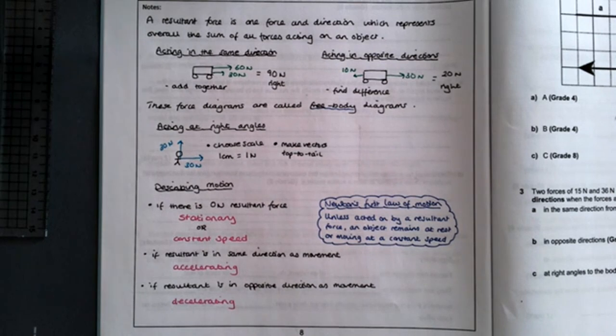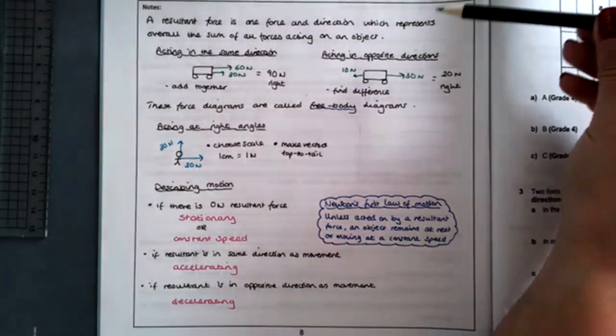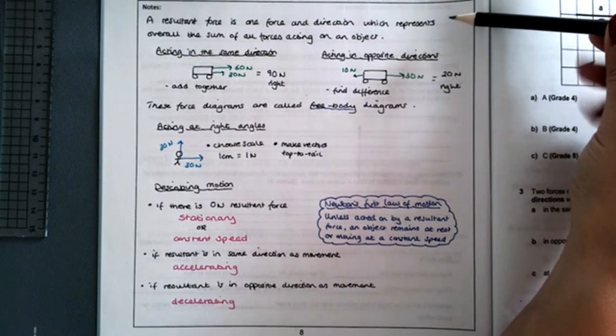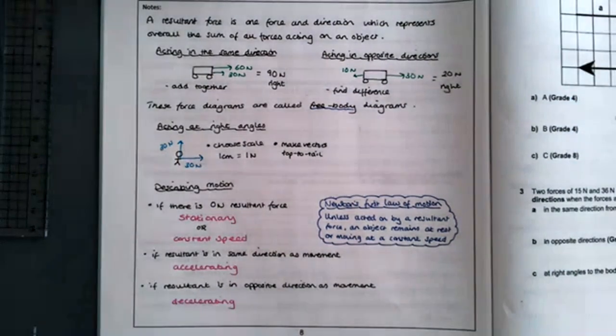A resultant force is one force and direction which represents overall the sum of all the forces acting on an object. There can be more than one force acting on an object, and this tells you where it's actually going to move, in which direction and with what size force.